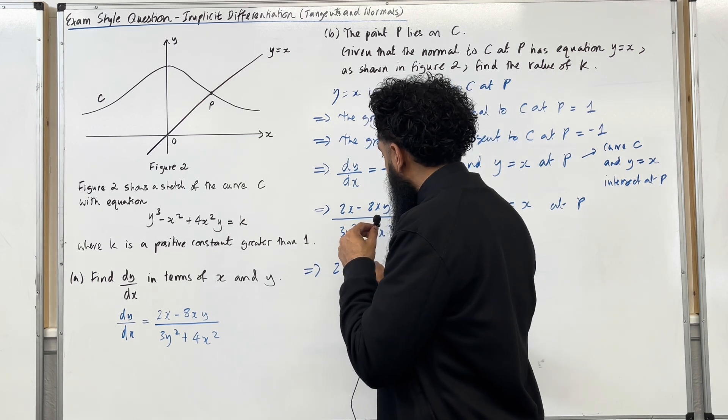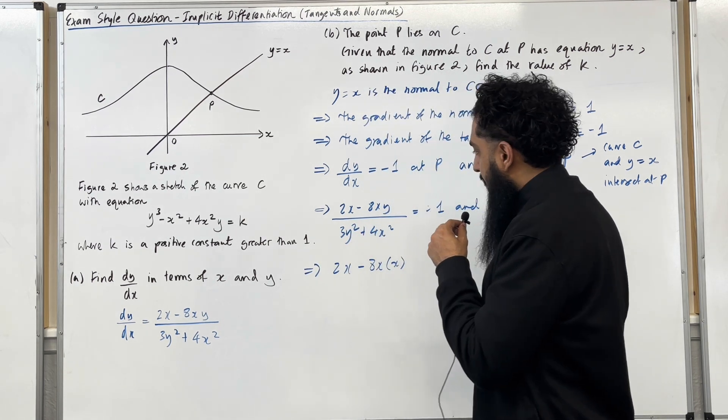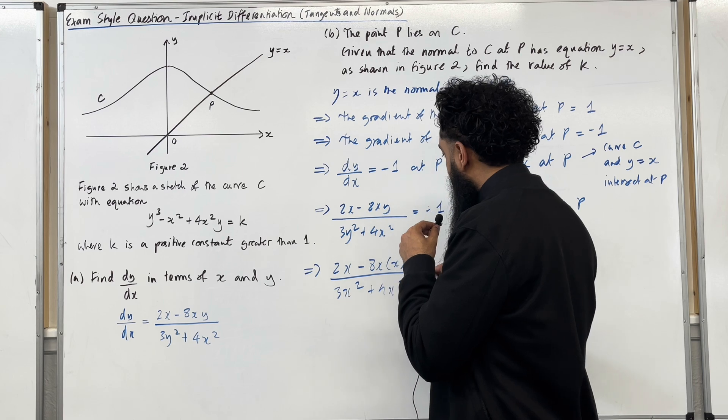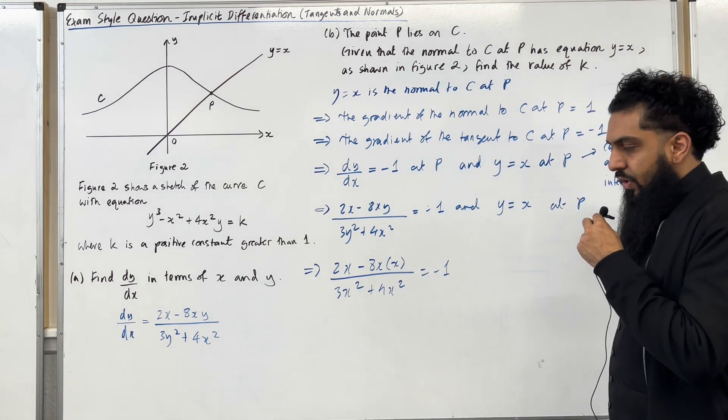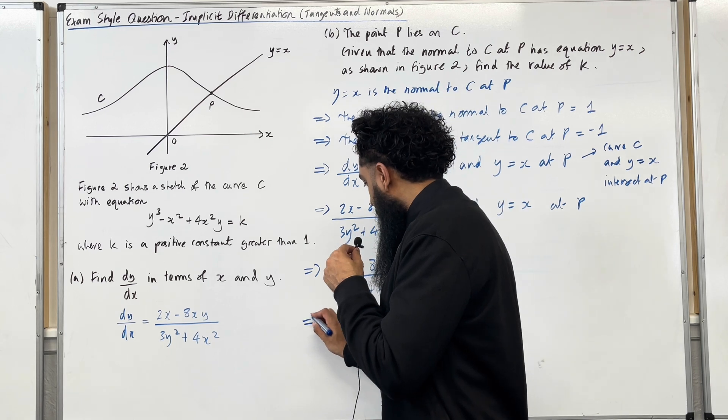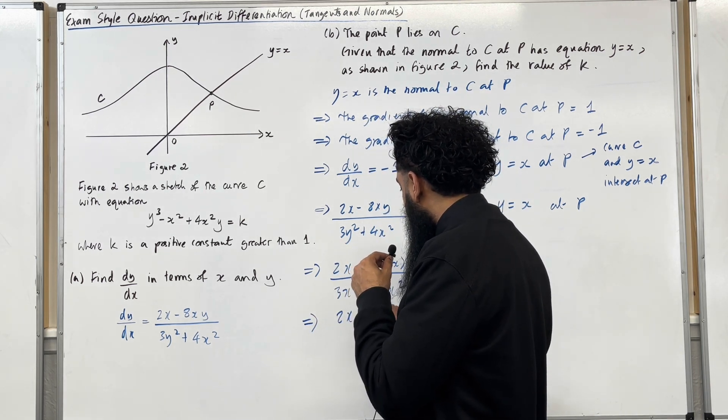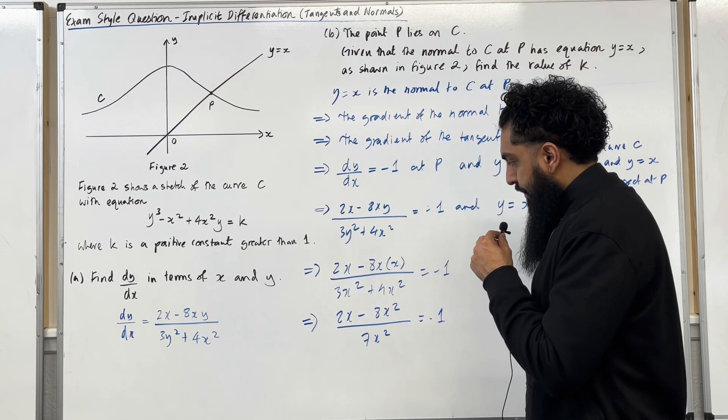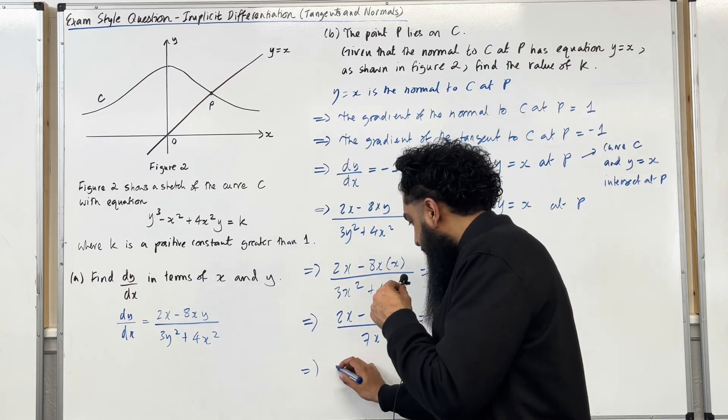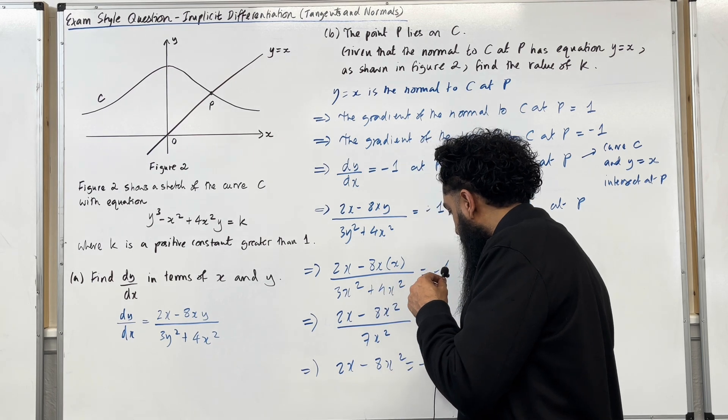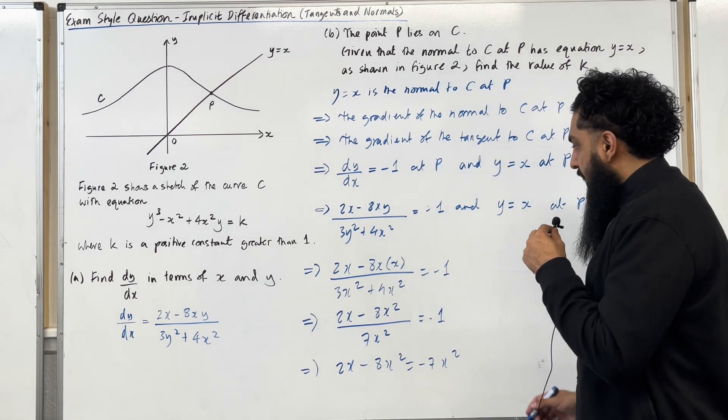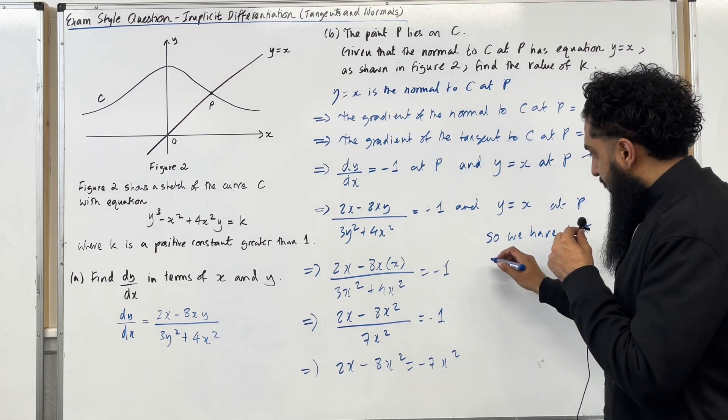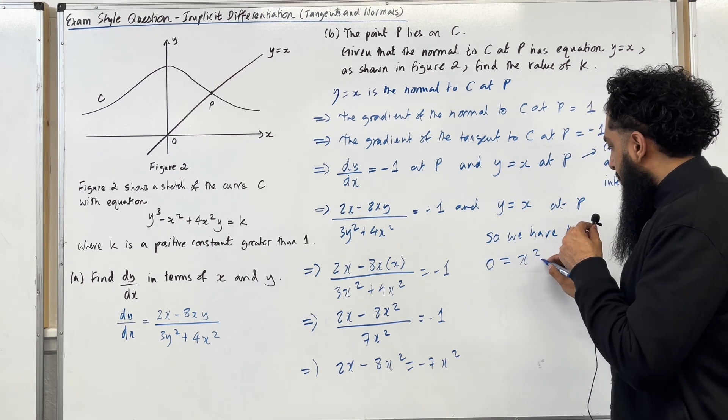So I've got 2x minus 8x multiplied by x over 3x squared plus 4x squared equal to minus 1. So I'm going to simplify this. I get 2x minus 8x squared all over 7x squared equal to negative 1. Take the 7x squared to the right-hand side. And then take all the terms to the right-hand side. So we have that 0 is equal to x squared minus 2x.